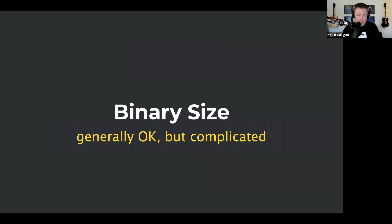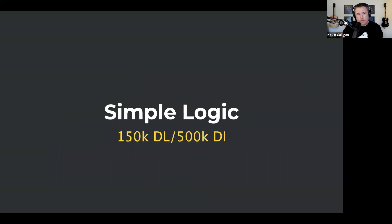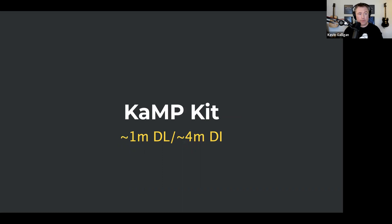Binary size — another common question: what is adding Kotlin going to do to your app? The summary is it's generally okay but a little complicated. With simple logic, no libraries, maybe a couple of strings, you can assume about 150K on the download, 500K on disk — that's the incremental cost on top of a simple Swift app. With CAMP Kit added to a blank app — including Ktor, SQLDelight, Koin, Stately, some database tables and logic — it's roughly 1MB download, 4MB on disk.